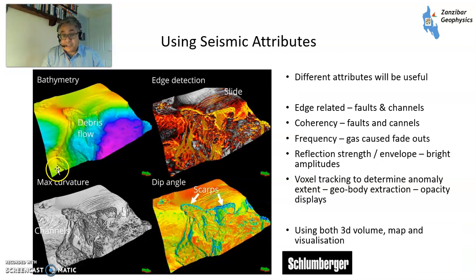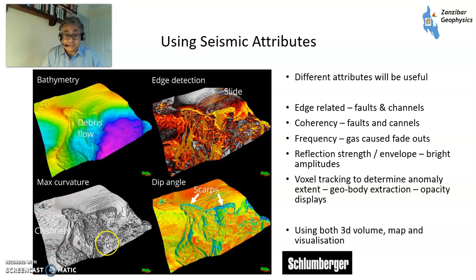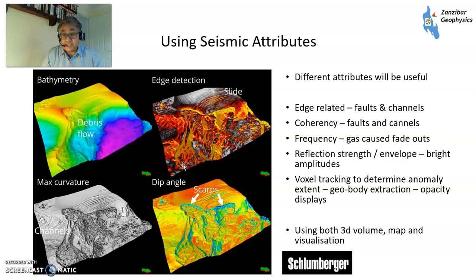You can use different seismic attributes. This is from Schlumberger's website, done in Petrel. You look at basic bathymetry, basic interpretation. You can look at curvature — a form of attribute looking at faults — dip angle, which is basically steep dips, and edge detection looking for edges. Other things include frequency — effectively looking for gas-caused phase-out — reflection strength or envelope, which gives you really bright amplitudes. And voxel tracking effectively takes a seed and tracks a channel or another geobody to see how far it extends automatically. So you produce volume maps and visualization to put it all together.